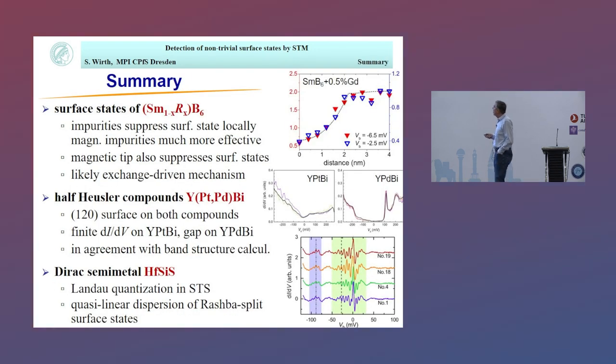That brings me to my summary. I hope I've shown you that we have indications for surface states in the samarium hexaboride, which are suppressed by magnetic impurities more heavily than non-magnetic impurities, and the same also happens for magnetic tips. It's very likely we have an exchange-driven mechanism. For the half-Heusler compounds, we could identify the 012 surface in both compounds and compare the density of states, and they are in agreement with surface band structure calculations. I actually intended to show a third material, hafnium silicon sulfide, where we see very nice quantum oscillations, but in the interest of time I skipped that. Thank you very much for your attention.